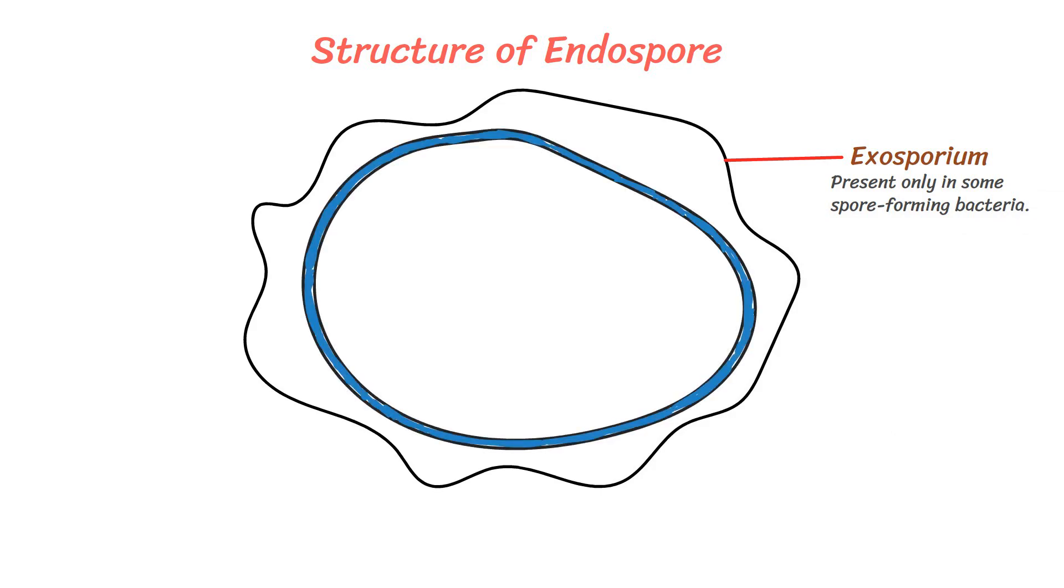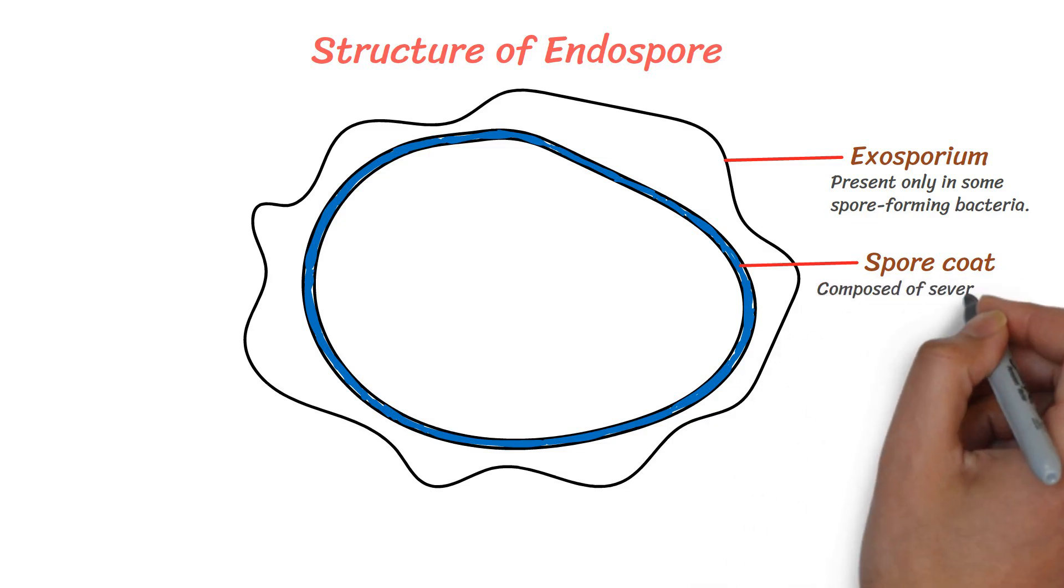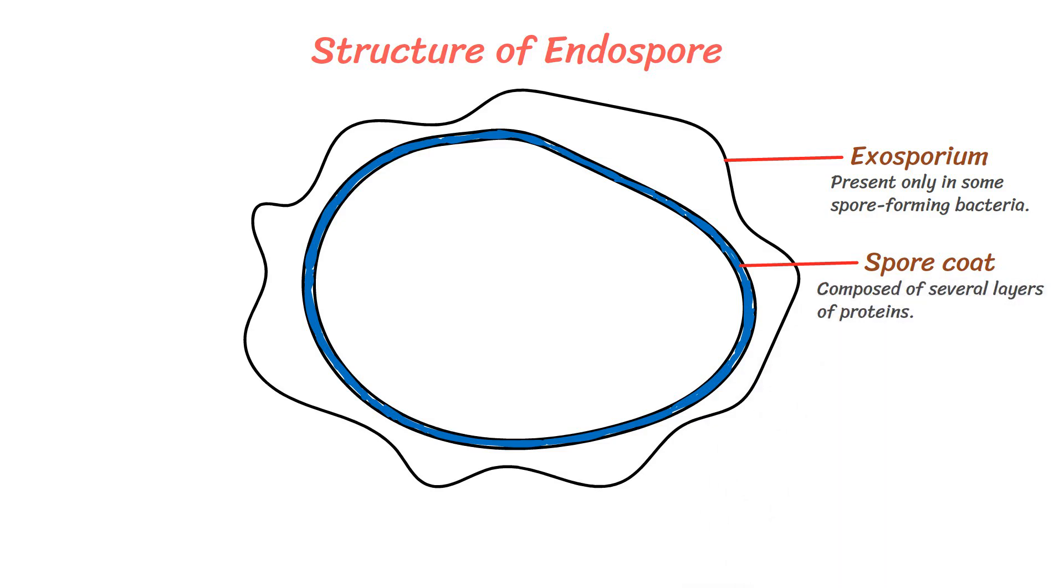Beneath the exosporium, a spore coat is present. The spore coat is composed of several layers of proteins. It is a thick layer, and therefore helps prevent the entry of harmful chemicals into the endospore.